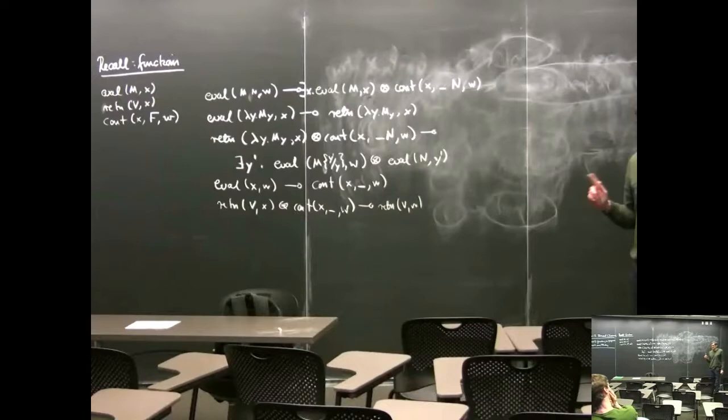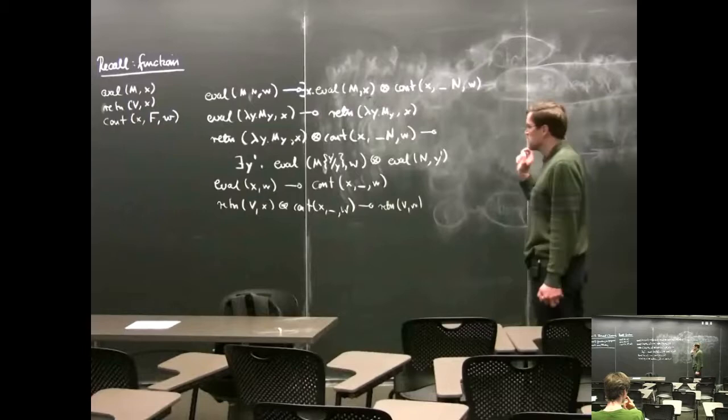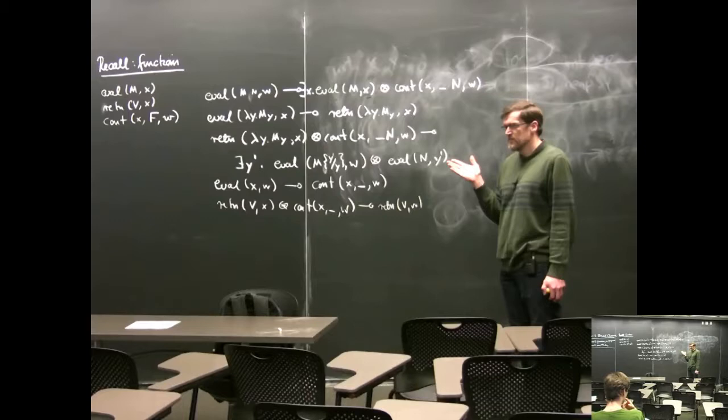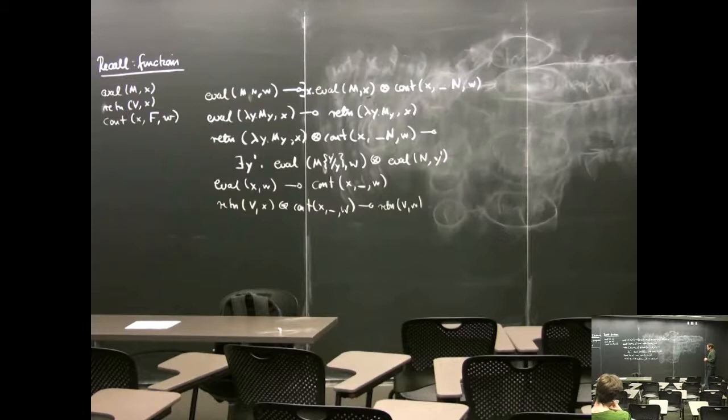We needed persistence, but not for this, because this is a linear lambda calculus. We needed persistence for when we had bang and let bang — when we wanted to implement that. Somehow we need to have things that can handle the fact that a variable might be referenced many times.